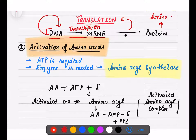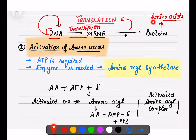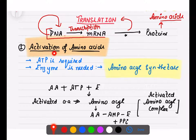For proteins, we need amino acids. If you recall transcription, we said nucleotides get activated. But here we don't need nucleotides — we need amino acids. So the first step in translation is always the activation of amino acids. When something is getting activated, we need ATP — adenosine triphosphate — which provides energy.